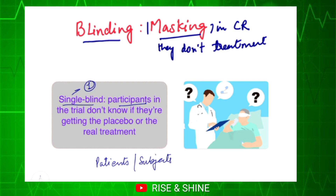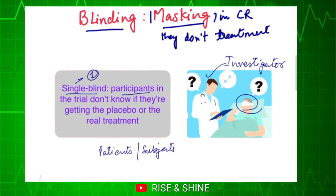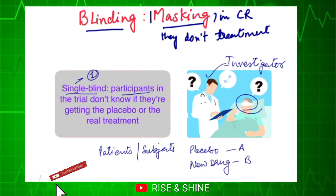The patients don't know which treatment they are getting — it is like their eyes are folded. However, the researcher, the investigator — or in other words the doctor — they know. For example, suppose there are two treatment groups: one is placebo, that is treatment group A, and another is the new drug, treatment group B. The patient is not knowing whether they are getting placebo or the new drug, but the researcher or doctor knows which treatment each patient is getting.